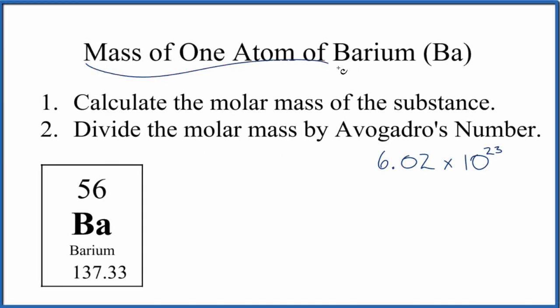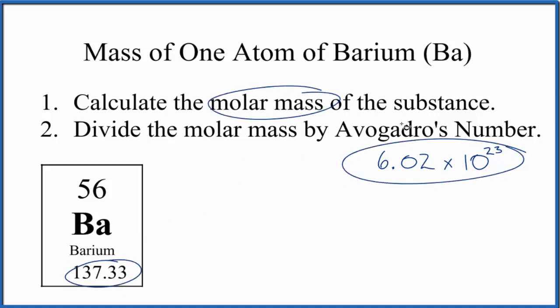Let's find the mass of one atom of barium. That's Ba. We're going to look at the mass of an average barium atom. So really, all we're doing is dividing the molar mass, in this case it's the atomic mass, by Avogadro's number. That'll give us the mass of one atom of barium.